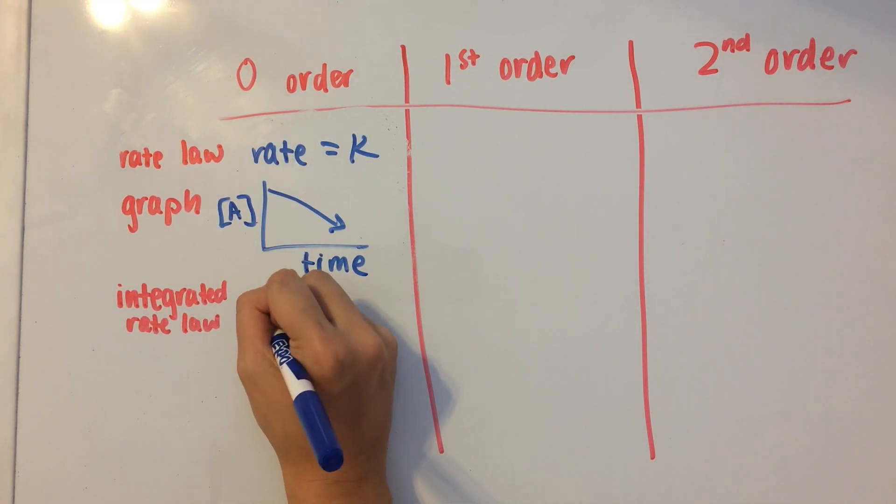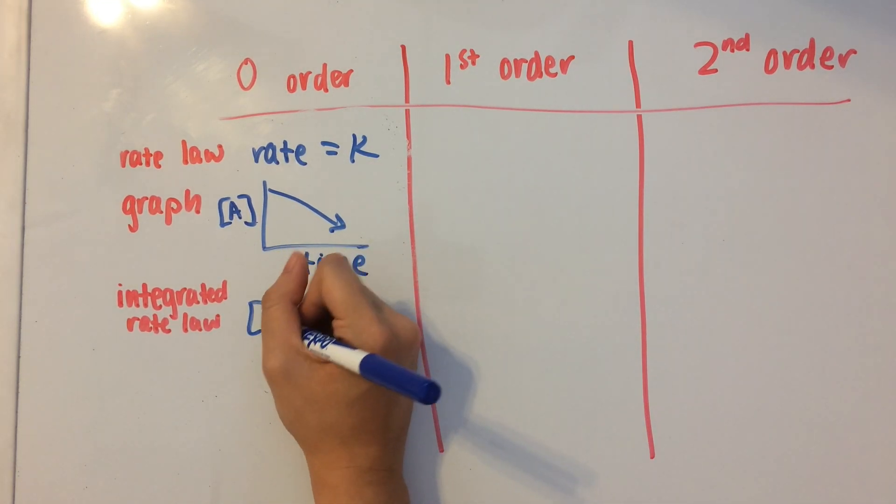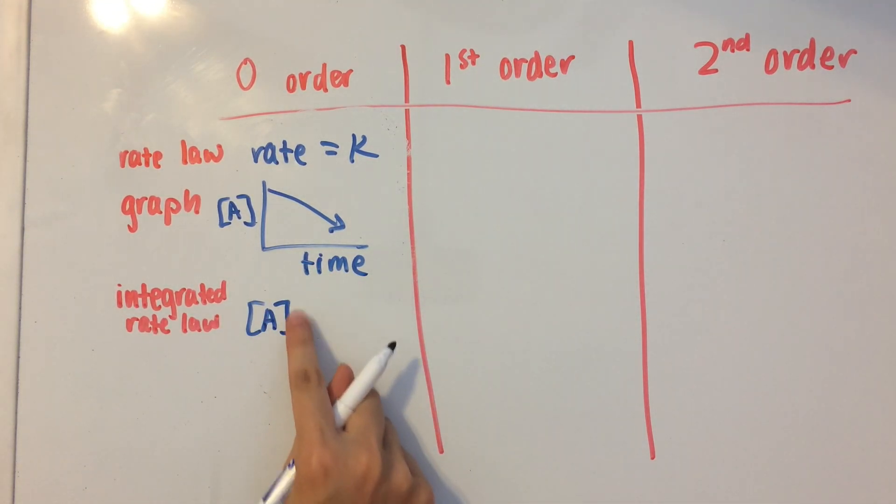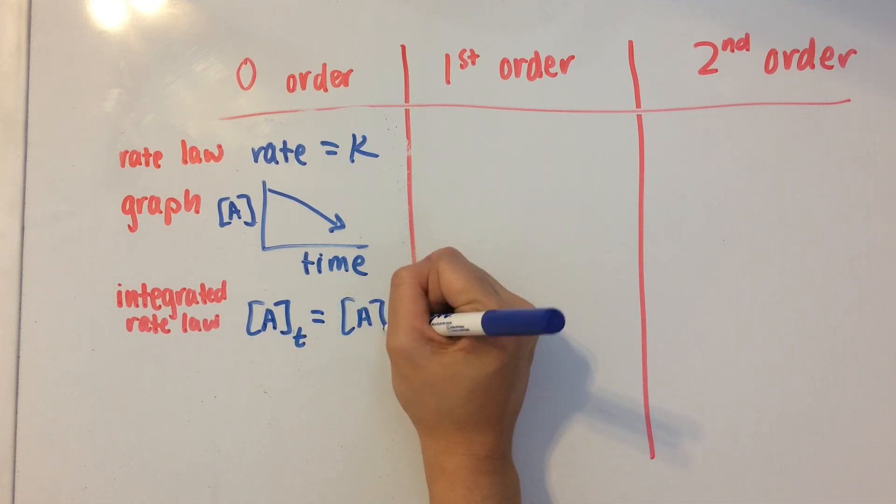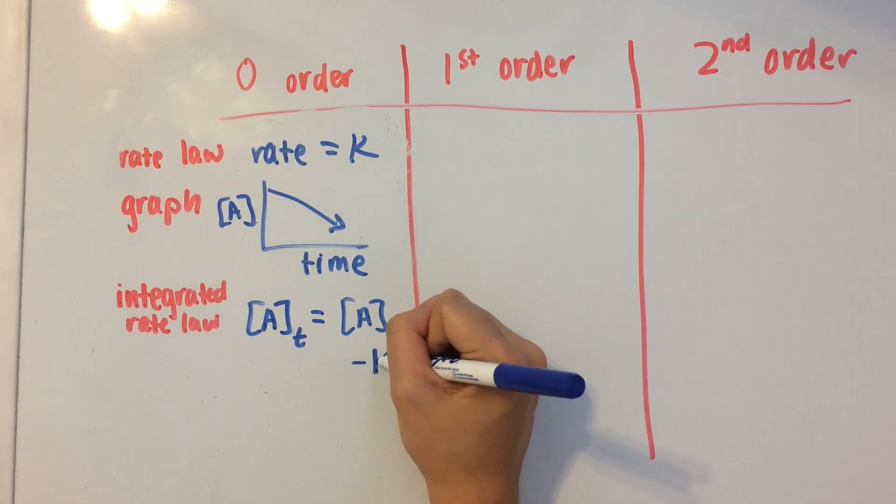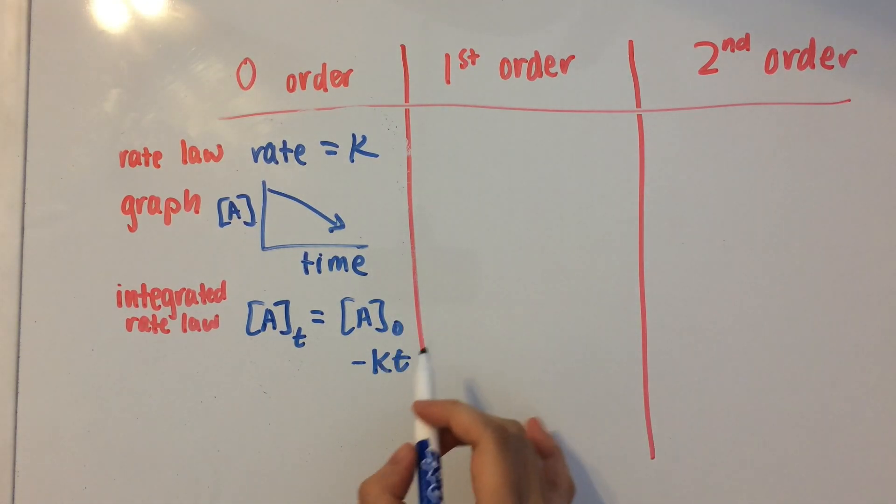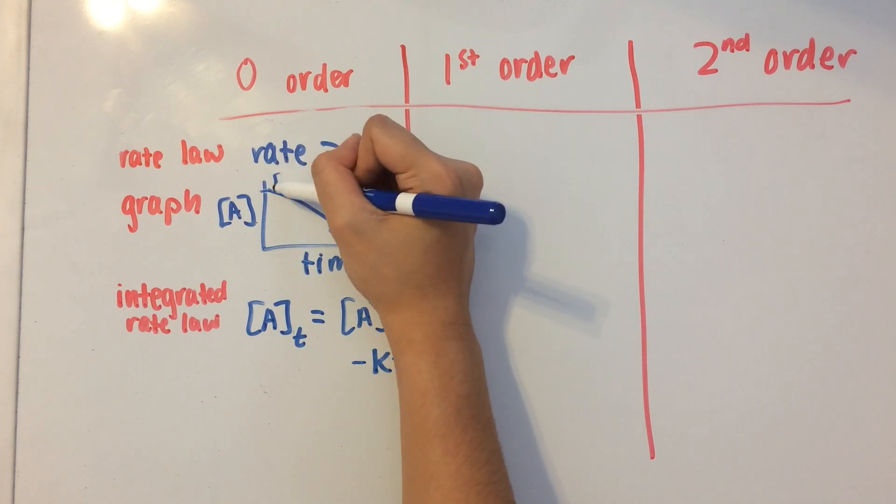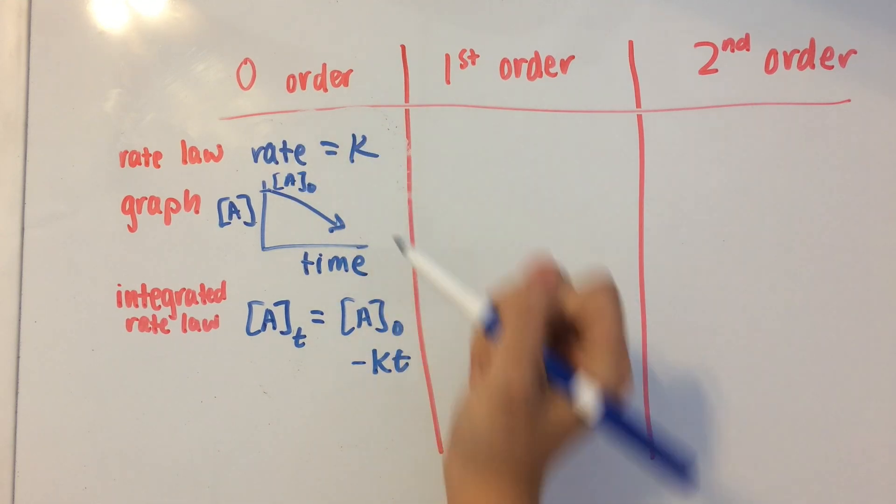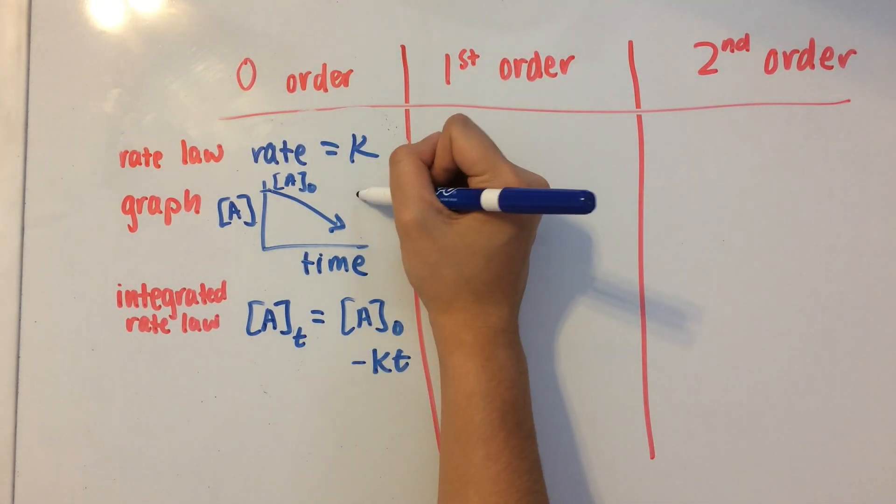So what the integrated rate law for a zero-order reaction looks like is concentration of A at a specific time equals initial concentration of A minus kT. So the initial concentration of A is going to be the y-intercept, and slope is going to be negative k.